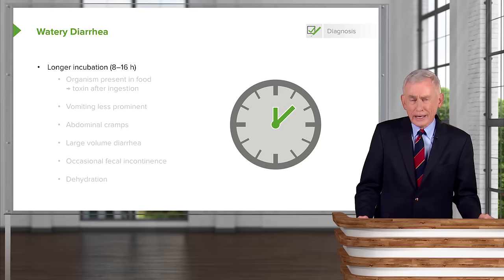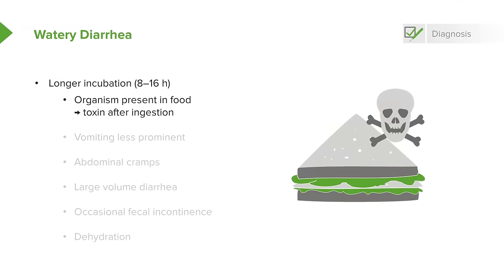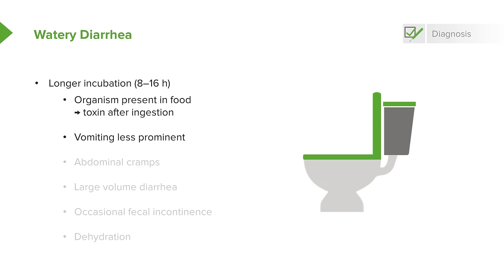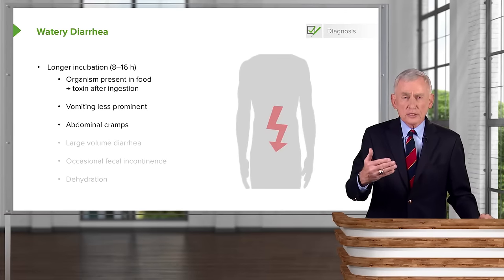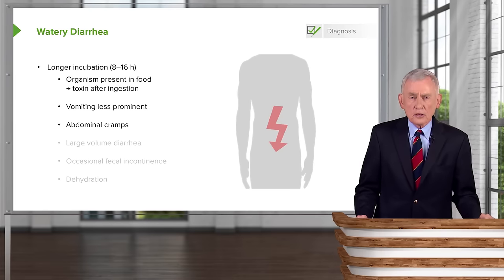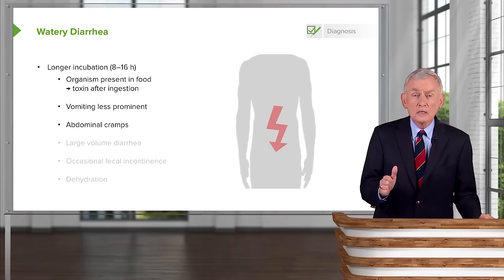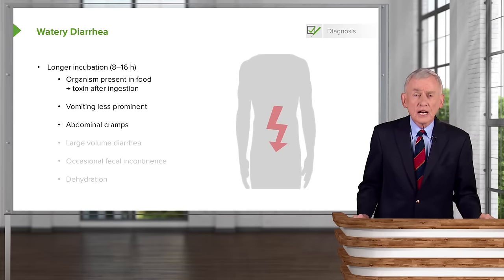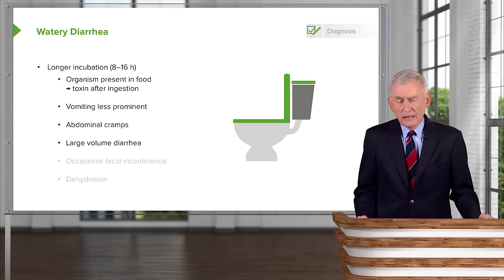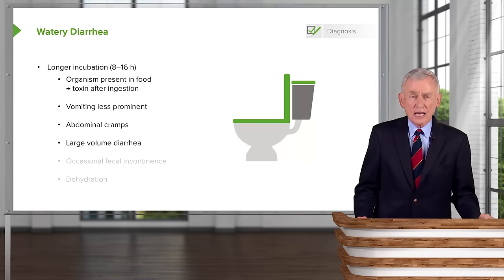There is also a longer incubation form of watery diarrhea with an incubation of 8 to 16 hours, where the organism didn't make its toxin until after it got into the body. Vomiting is less prominent, and abdominal cramps are quite prominent. A good physician should ask about where the cramps are located — peri-umbilical cramps point to a small bowel cause, while cramps below the umbilicus in the hypogastric region point to large bowel causes.